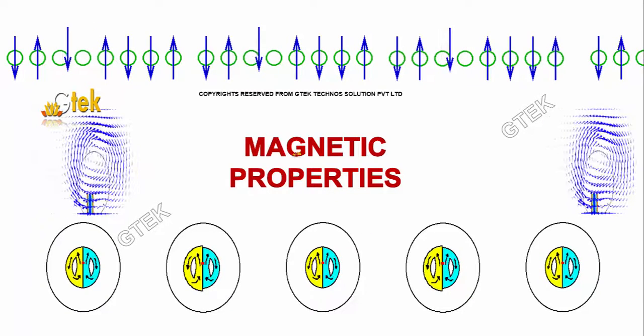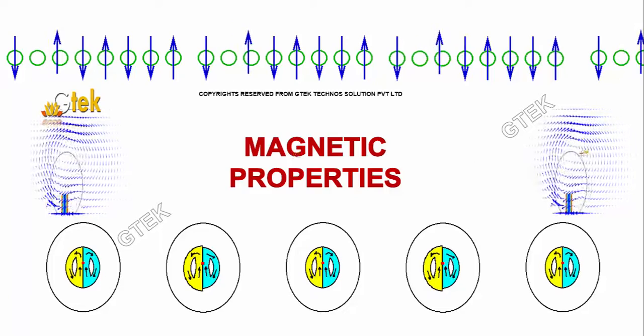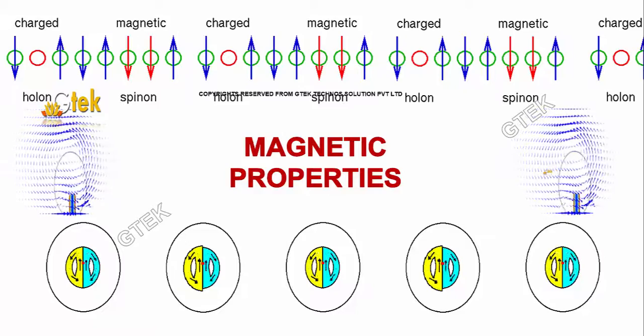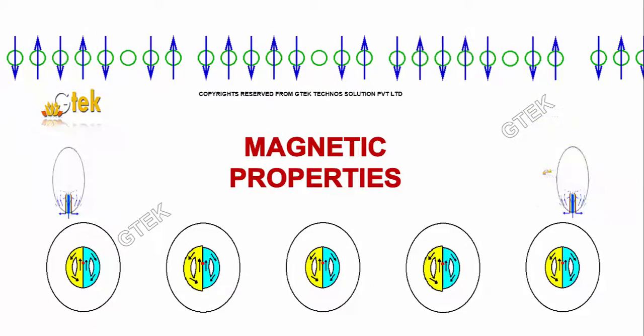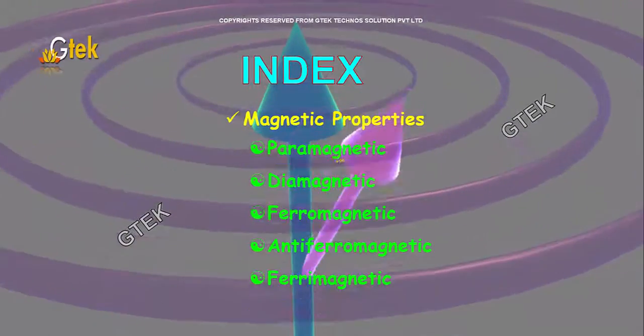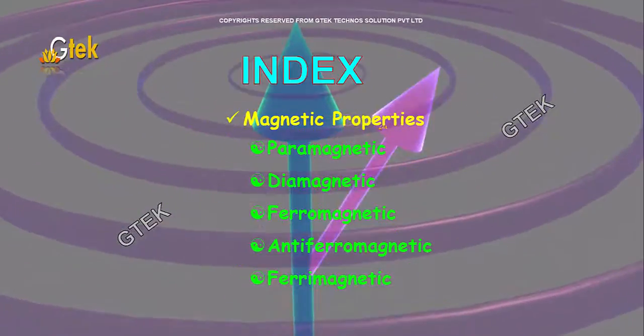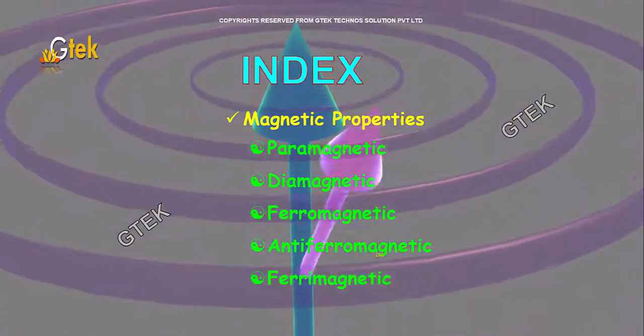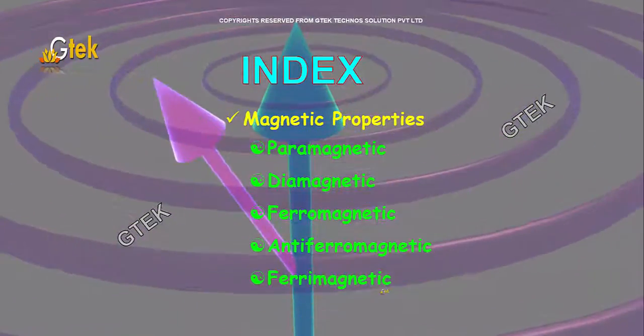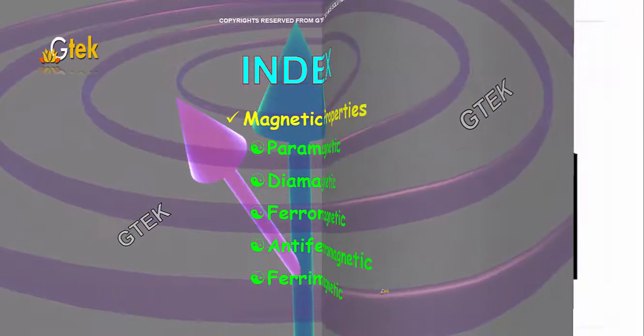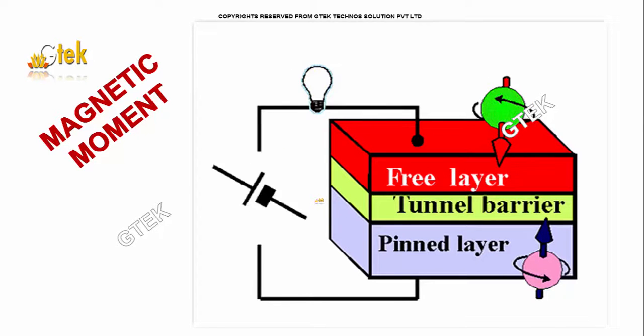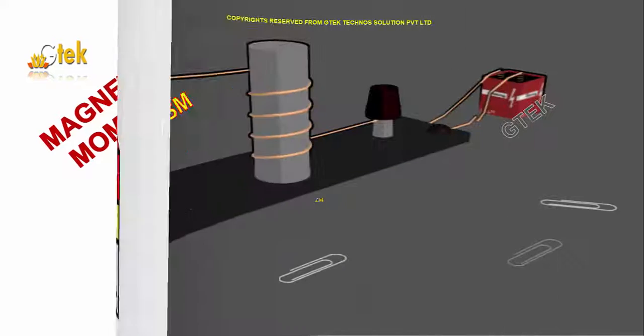Magnetic properties: magnetic property is one of the very important properties in most of the elements to attract and repel each other. Here is the index. I'm going to talk about the magnetic properties under the paramagnetic, diamagnetic, ferromagnetic, anti-ferromagnetic, and finally ferrimagnetic properties.